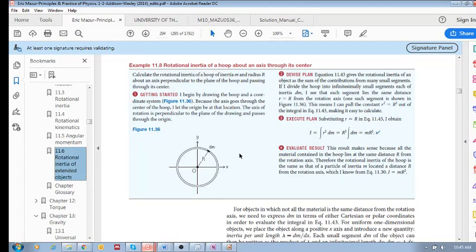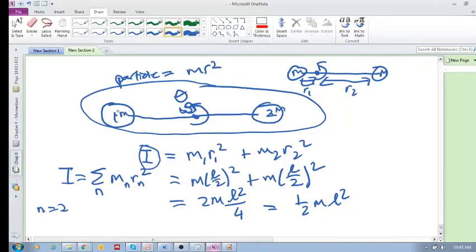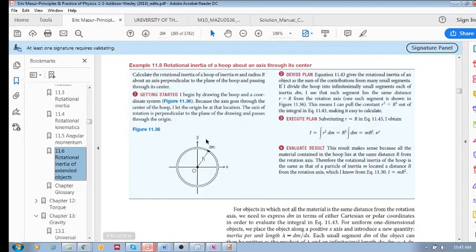So what are we going to do? There is our equation for a continuous extended object, r squared dm. So first of all, we need to define what is our little piece of mass. In the same way we define that is our mass for this system, here we define that is our little mass, and we sum up all the masses.